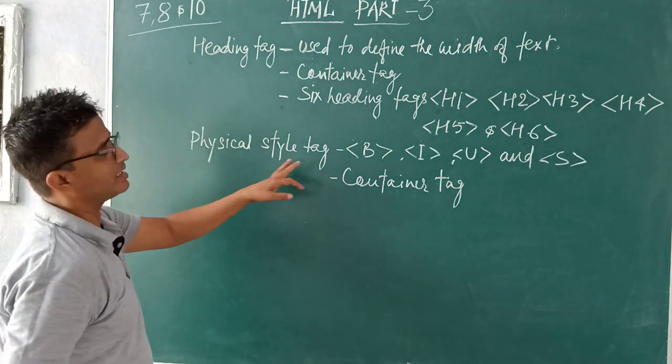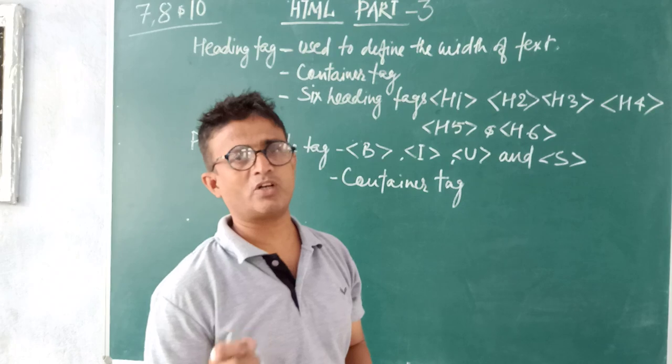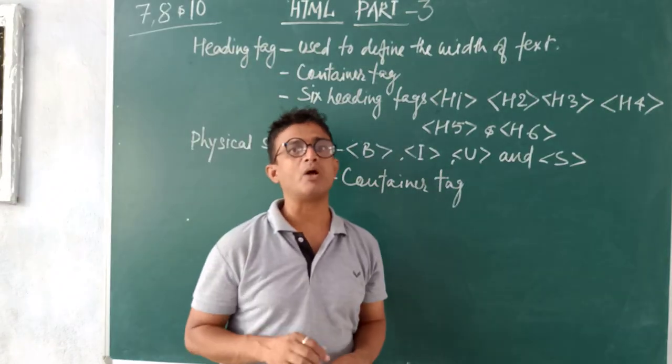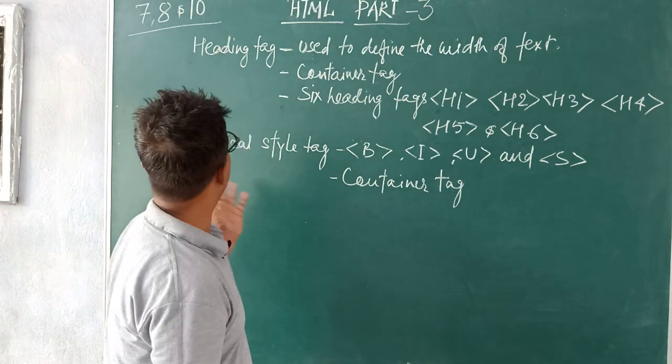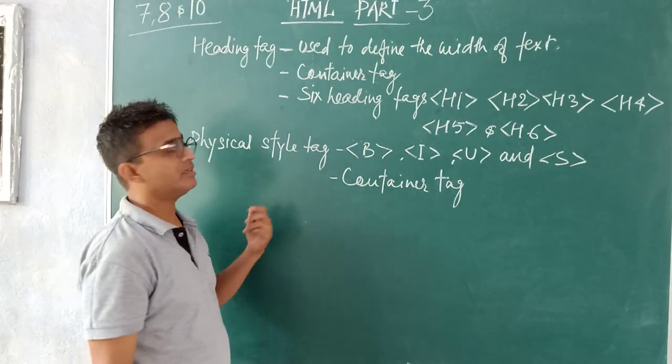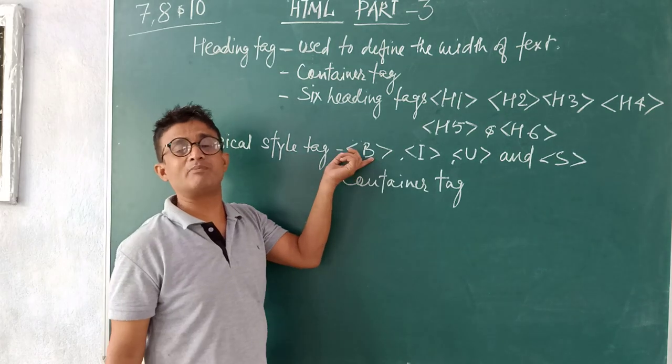Another tag is physical style tag. Suppose you want, or when you write in your copy, you make some text bold with the help of your pen. Here in the HTML, what you will do? You will use B for making your text bold.